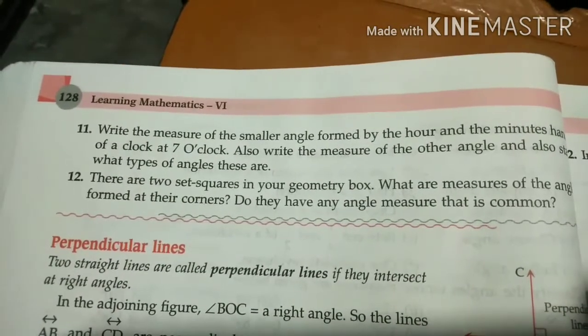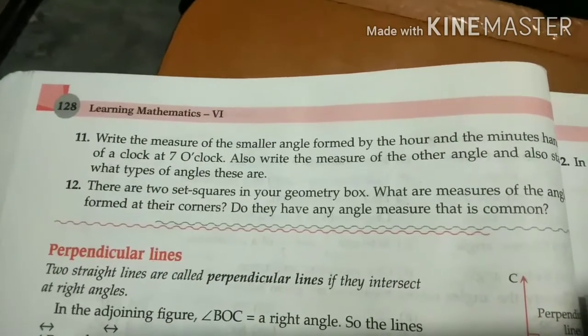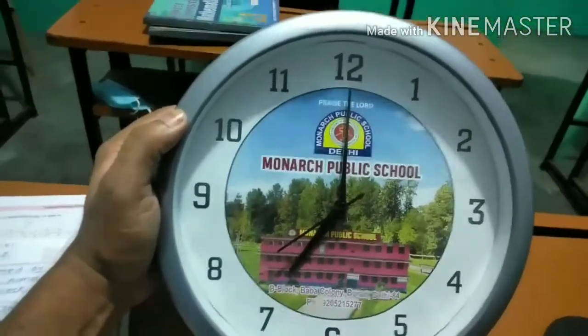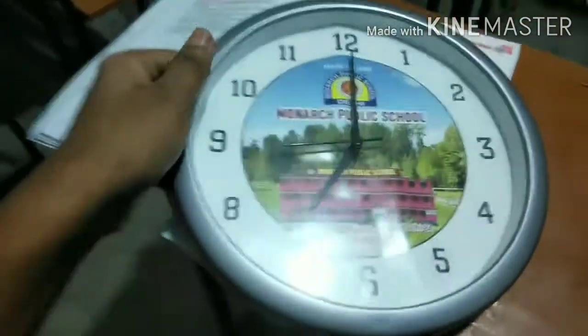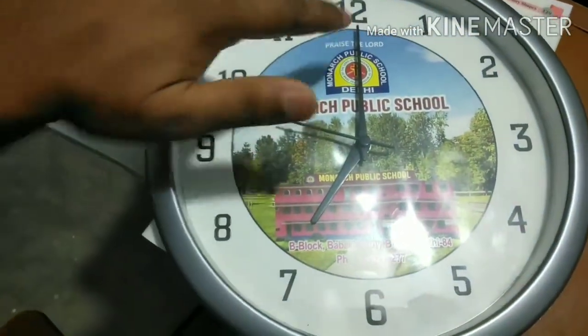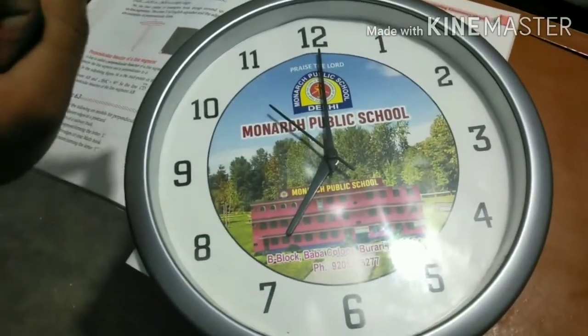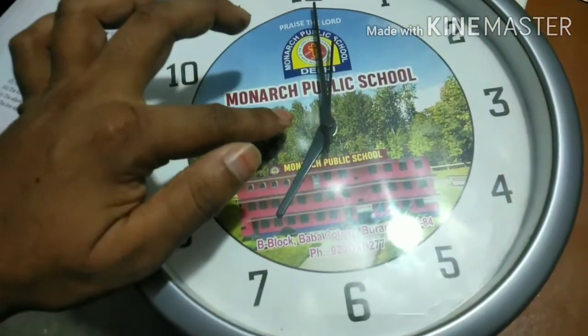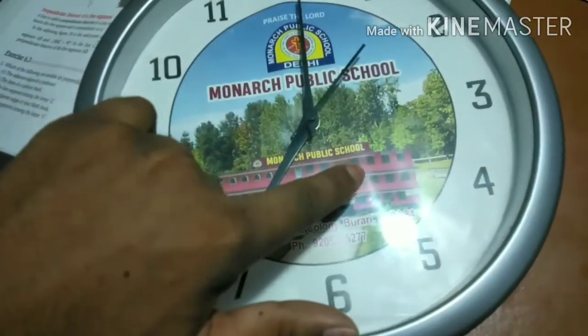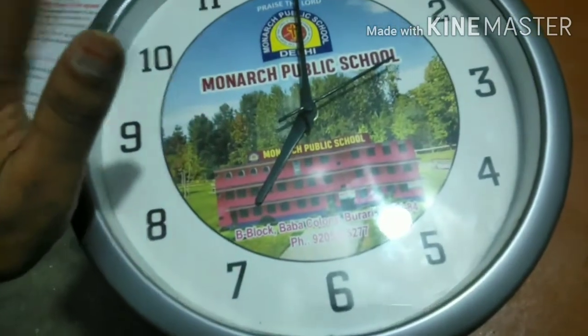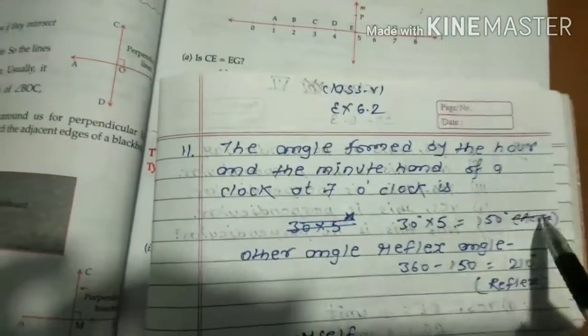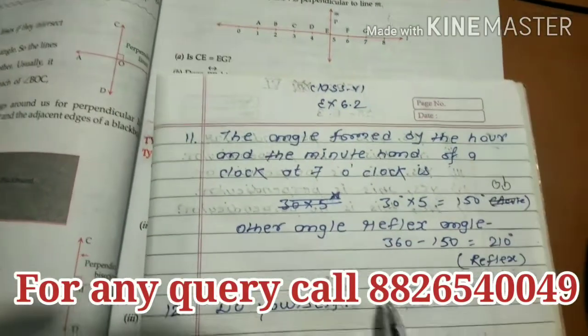Question number 11: find the measure of the smaller angle formed by the hour and minute hands of a clock at 7 o'clock. From 7 to 12, there are 5 points. One point equals 30 degrees, so 30 times 5 equals 150 degrees. This is the inner angle. If you want the reflex angle, subtract 150 from 360. Write the types of angle as well.